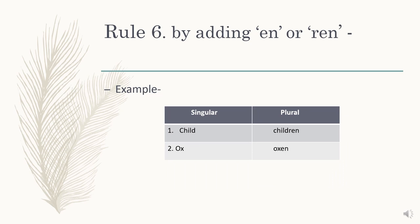Rule number 6: by adding en or ren. According to this rule, we have to add en or ren at the end of some words to make their plural form. For example: child becomes children, ox becomes oxen.